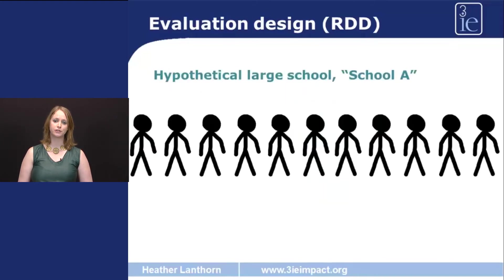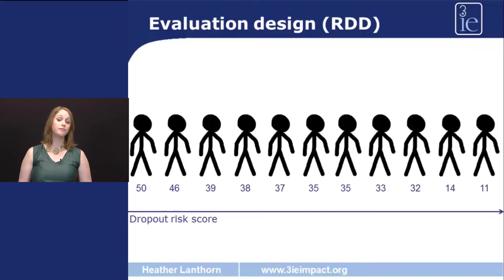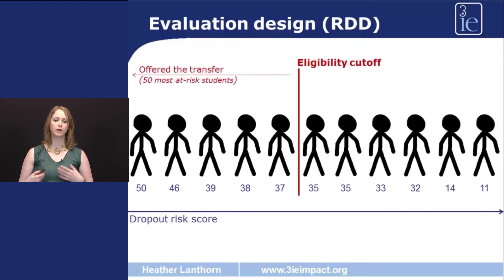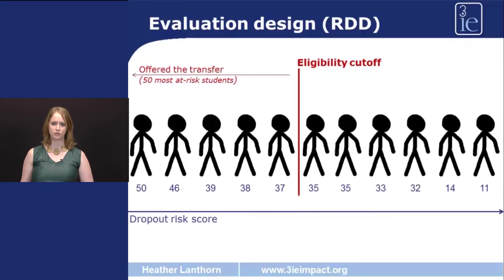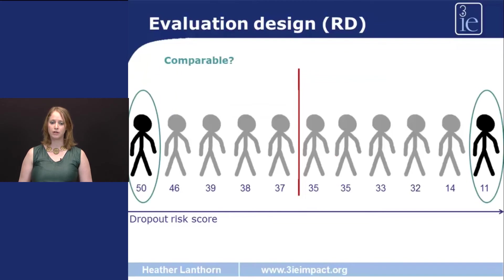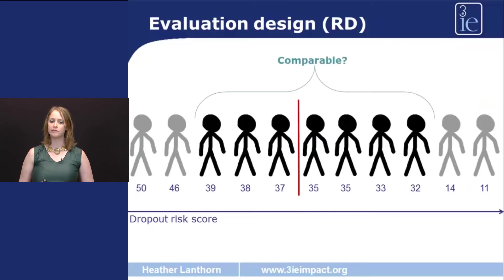Let's consider hypothetical large school A — in the Cambodia case, a school with more than 200 students — to understand what the researchers did. Here we have an array of dropout risk scores, with a score of 50 representing a particularly high risk of dropping out between 6th and 7th grade, and 11 representing a relatively lower risk. For this particular school, where we're going to offer the scholarship to 50 students with the highest risk of dropping out, let's say the cutoff falls at 36, such that those with a score higher than 36 will be offered the scholarship, and those with a score lower than 36 will not. We may feel comfortable saying that those on either side of the discontinuity were similar prior to the program, and that the main difference between them is going to be the offer of the program — that is, the treatment.